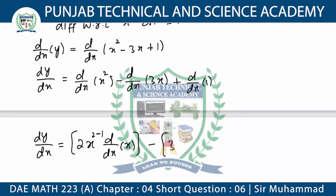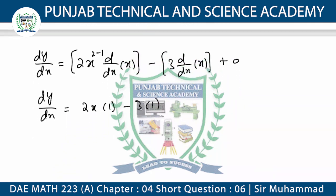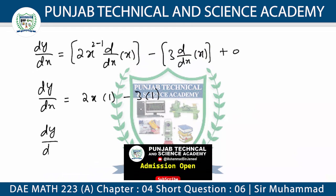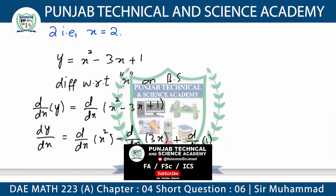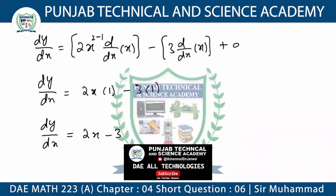Minus here, you have 3 as a constant and the derivative of x with respect to x is 1, and the constant derivative is 0. So dy/dx is equal to 2x minus 3. That is the derivative value.